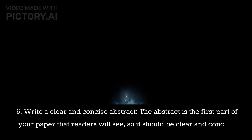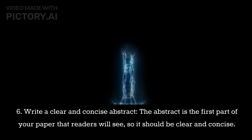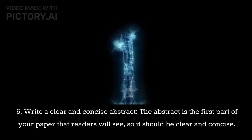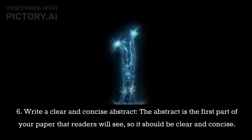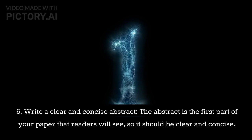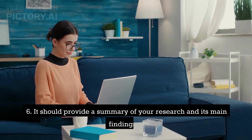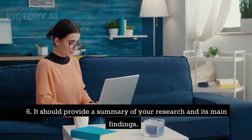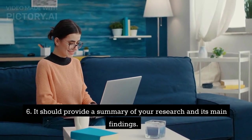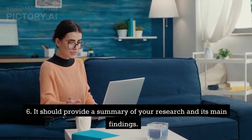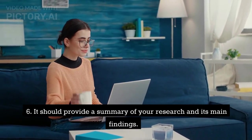Step 6: Write a clear and concise abstract. The abstract is the first part of your paper that readers will see, so it should be clear and concise. It should provide a summary of your research and its main findings.